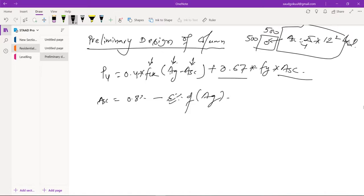We don't go for 6% because if we congest the column with heavy rebar, then concrete work becomes very hard. Due to this reason, we go from 0.8 to 4%.